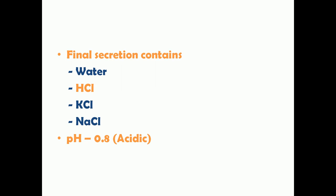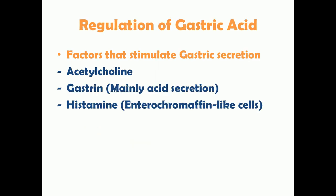The pH of gastric acid is about 0.8 to 1, making it highly acidic. Now let's look at the regulation of gastric acid secretion. The main factors that stimulate gastric secretion are acetylcholine, gastrin, and histamine.